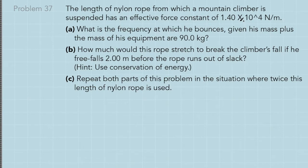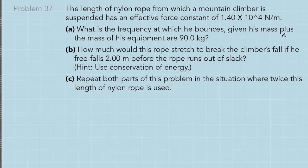This problem is from OpenStax University Physics Volume 1, Chapter on Oscillations. The length of nylon rope from which a mountain climber is suspended has an effective force constant of 1.4 times 10 to the 4 newtons per meter. In part A, what is the frequency at which he bounces, given his mass plus the mass of his equipment is 90 kilograms?